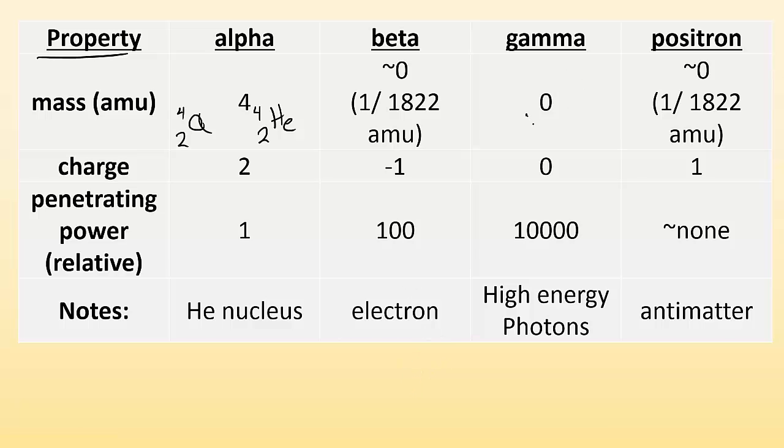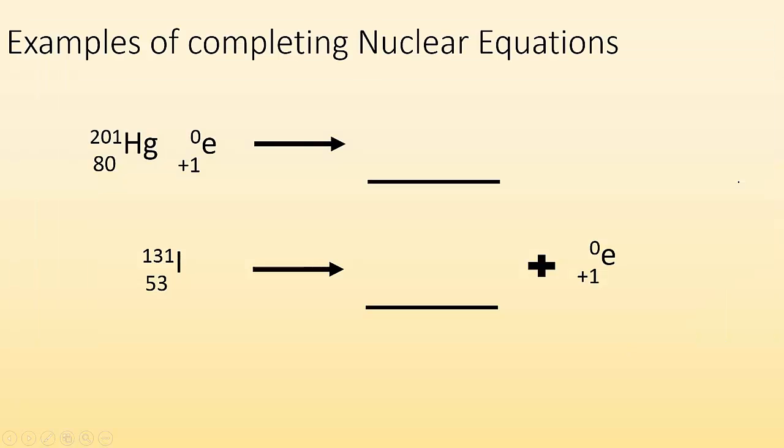And gamma, we have a mass of actually zero. It is zero. We have a charge of zero, and its penetrating power is like 10,000. So, it's a lot more penetrating than alpha or beta particles. It's basically just a high-energy photon. And then, we have positron emission, where a positron is a lot like an electron. It's an anti-electron. So, it has the same mass. It has the opposite charge, though. So, its charge is positive 1, and its penetrating power is like relatively non-existent because as soon as this antimatter comes into contact with matter, it annihilates, and it's gone. So, it's not going to pierce through anything, really.